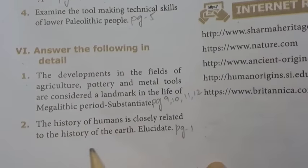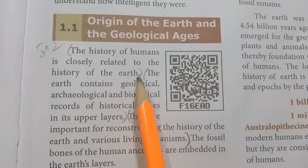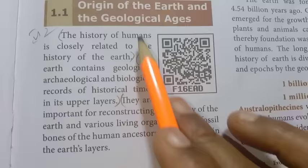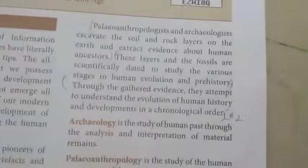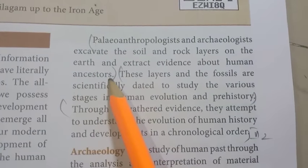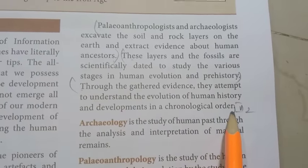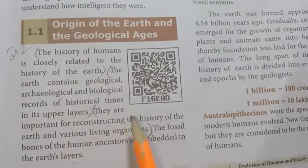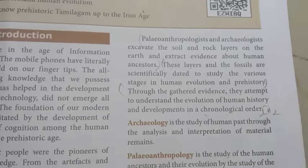Second detail question: the history of humans is closely related to the history of the earth - elucidate. Turn to page 1, under 'Origin of the Earth and the Geological Ages.' Start from the history of the earth, then upper layers and living organisms. Then paleoanthropologists traced human ancestors. These layers tell us about prehistory. Cover the whole paragraphs for six points total for this detail answer.